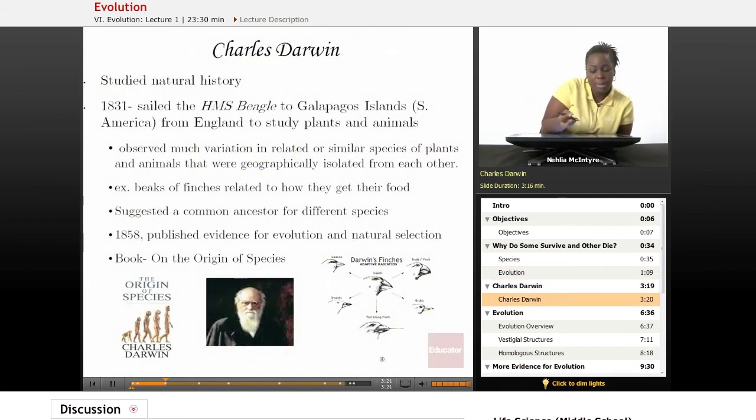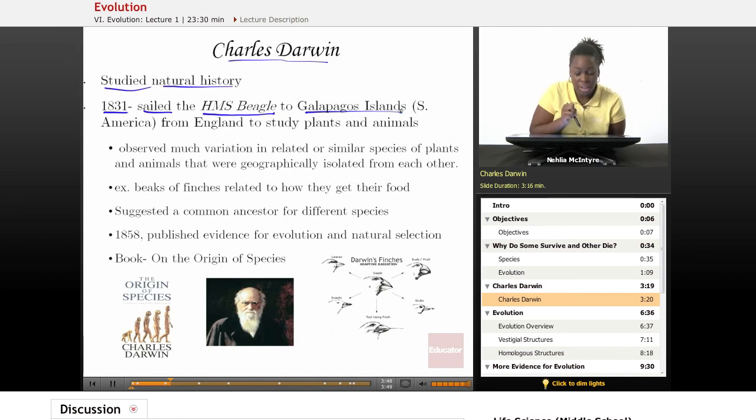All right, so let's talk about Charles Darwin. Who was he and why is he important when we're discussing evolution? So Charles Darwin studied natural history. He was a scientist and he is known for developing the theory of evolution. He is basically best known for the fact that he, in 1831, sailed the HMS Beagle to the Galapagos Islands, which are islands off of the mainland of South America, and he's from England, and he went there to study plants and animals.